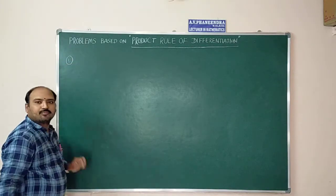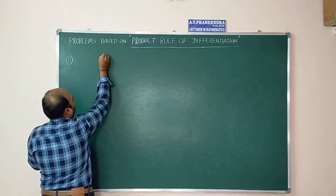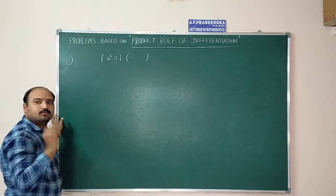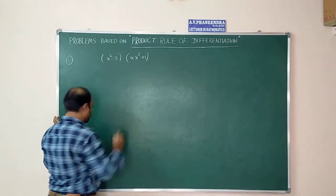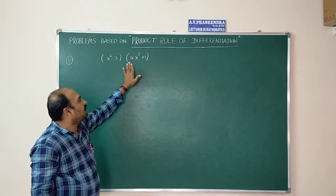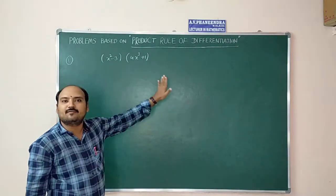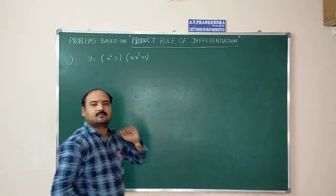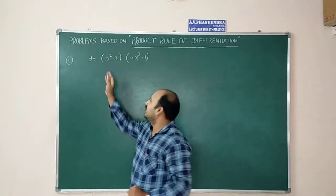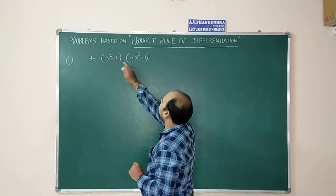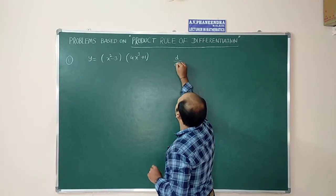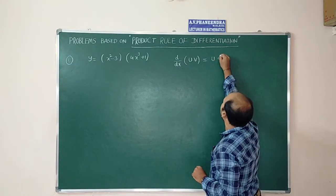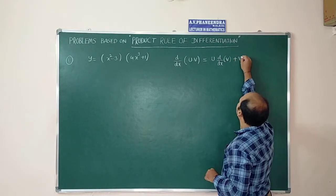First problem: find the derivative of the function (x² - 3)(4x³ + 1). Assume the first function as u and the second function as v. The product rule states: d/dx of (u·v) equals u·(d/dx of v) plus v·(d/dx of u).